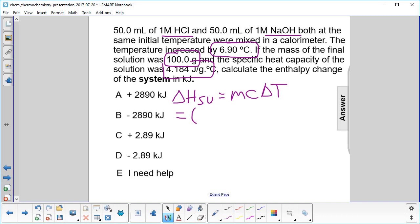We put our numbers in: 100 grams, then 4.184 joules per gram degrees Celsius.